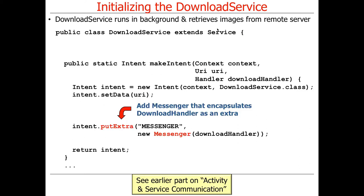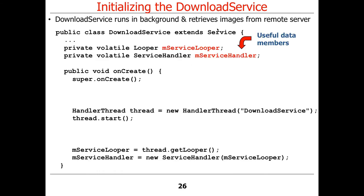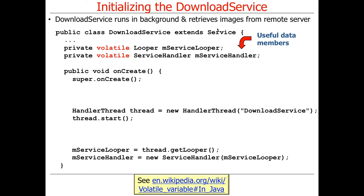In download service, we have a couple of data members: mServiceLooper, which is a Looper (an Android feature), and ServiceHandler, which we develop ourselves. You'll notice both are defined as volatile. Volatile means that reads and writes to these things are atomic, so you can access them in multiple threads safely. The onCreate method — called when it's first launched, when startService is called the first time — goes ahead and creates a thread that runs in the background. This is a very important Android idiom with respect to concurrency.